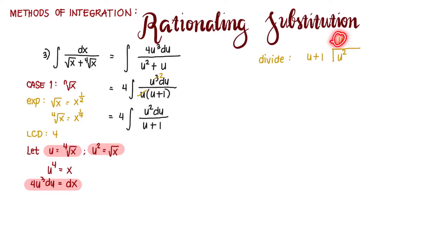We multiply u times u. That's u squared. u times 1 is u. Then we subtract. This is cancelled. There is an imaginary 0 here minus u. That gives us negative u. And then we divide. First term divided by the first term. That gives us minus 1.